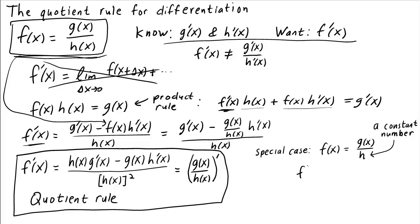In this case, calculating the derivative is simple. F prime of x is just g prime of x over h. This result is consistent with the full formula, since h prime is zero, given that it's a constant.